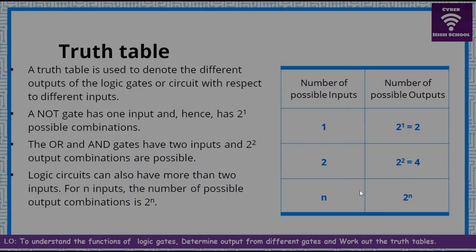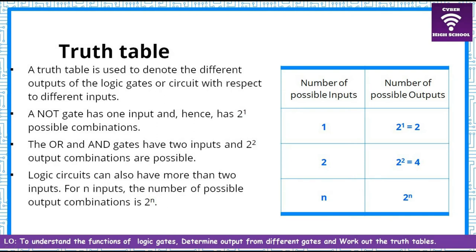To understand how gates operate, it is important to introduce the truth table. You will be asked in some instances to tabulate the truth table of a logic circuit. When you have one input into a gate, you have two possible outcomes — on or off. When you have two inputs, you will have four possible outcomes. For any number of inputs, the possible outcomes are equivalent to two to the power of n.